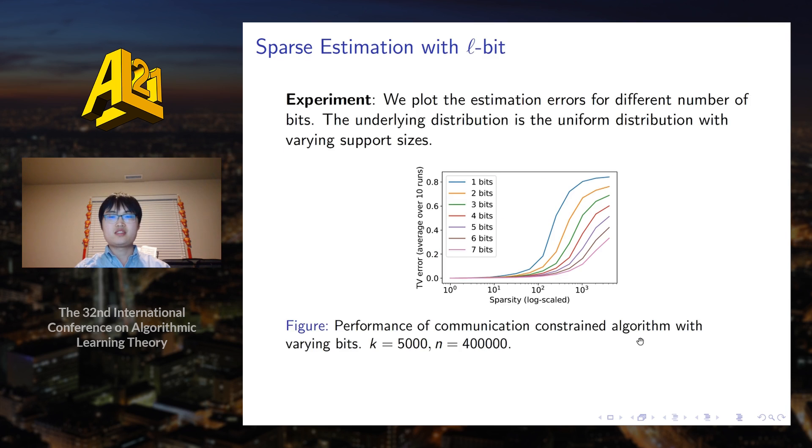We did an experiment for different number of bits and variant support sizes. We can see that similar to the plot for LDP, with smaller support size, the estimation error becomes much smaller.